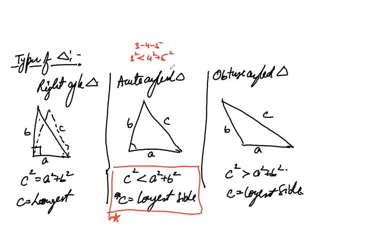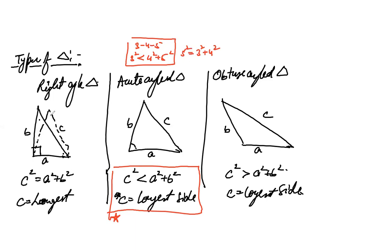Please keep that in mind because data sufficiency questions especially will test you around these kinds of facts. For three, four, five: five squared must be compared with three squared plus four squared, and since they are equal, three-four-five is confirmed as a right angle triangle.